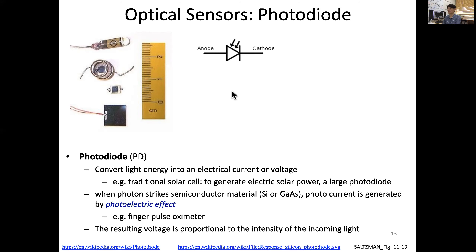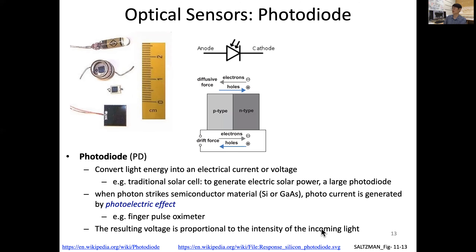The resulting voltage is proportional to the intensity of incoming light. Inside the photodiode, there is a p-type region and an n-type region — the n-type has electrons and the p-type has holes. You can apply a bias, and external light will create a photo current.